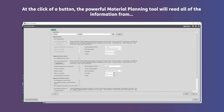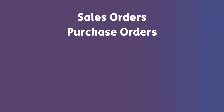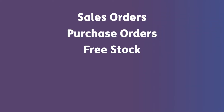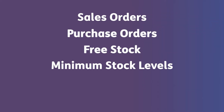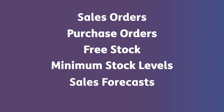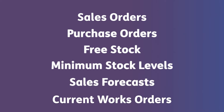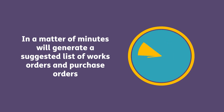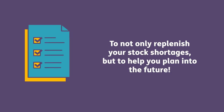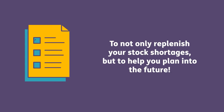At the click of a button the powerful material planning tool will read all of the information from sales orders, purchase orders, free stock, minimum stock levels, sales forecasts and current works orders, and in a matter of minutes will generate a suggested list of works orders and purchase orders to not only replenish your stock shortages now but to help plan into the future.